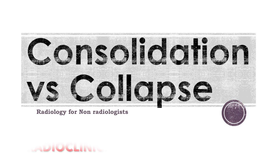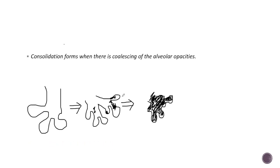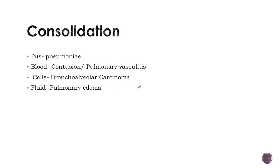Welcome to Radio Clinics, the site dedicated to teaching radiology for non-radiologists. Consolidation forms when there is coalescing of alveolar opacities. We can see something filling the alveoli, and when they coalesce with each other, they form consolidation.